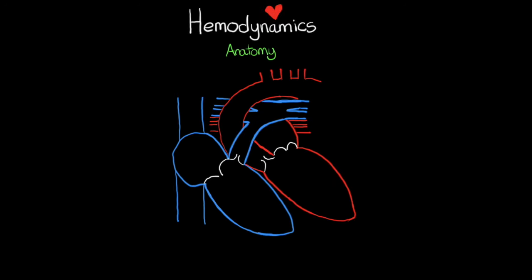Let's jump into our first section: the basic anatomy of the heart and the vascular system. This is mainly a review to make sure we're all speaking the same language. The key parts to label are the right atrium, the right ventricle, the left atrium, and the left ventricle — our four major chambers. The atrium pumps and feeds blood into the ventricle, and the ventricle pumps into the vasculature, moving blood to various parts of the body.